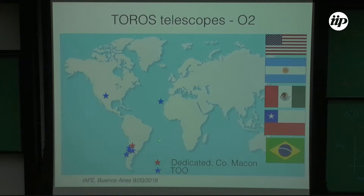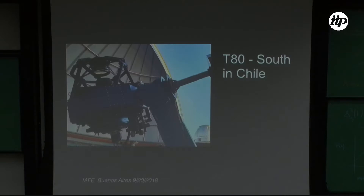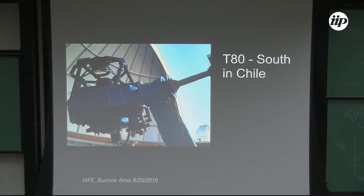The T80-South is a telescope constructed and operated by Brazilian scientists. There is a similar T80-North. The TOROS telescope is also at the site — at the time we had a smaller telescope at the site that participated in the event, but the main telescope used was the T80-South. We also used another telescope in Bosque Alegre, a very old one from the 1930s, but a big telescope.